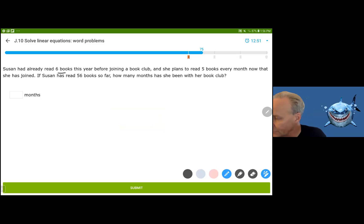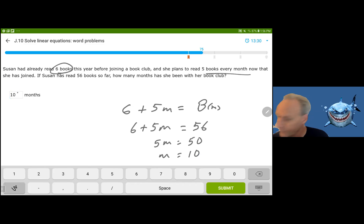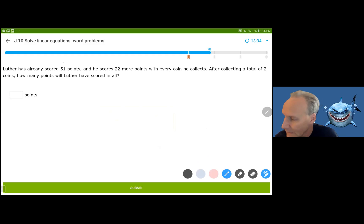Susan has already read six books. That is her initial starting point. And she plans to read five books every month. This five is the rate of change. She has read 56 books so far. So this is the number of books based on the number of months going by. And the number of books is 56. And you need to solve this. You subtract the six from both sides. You get 5M equals 50. Divide by five. And you get the M is equal to 10 months.